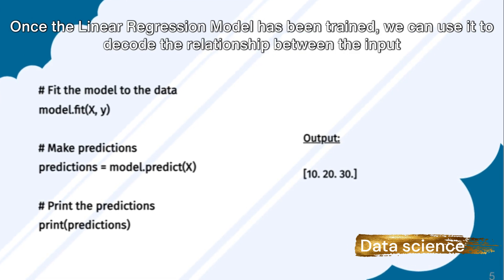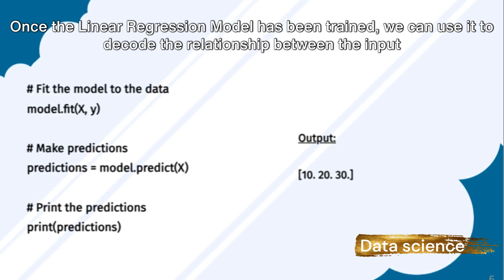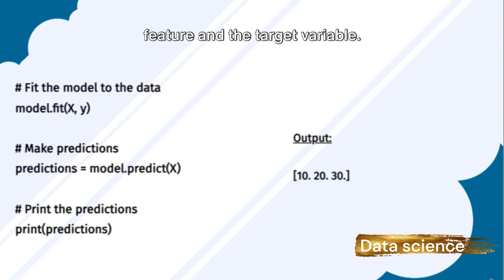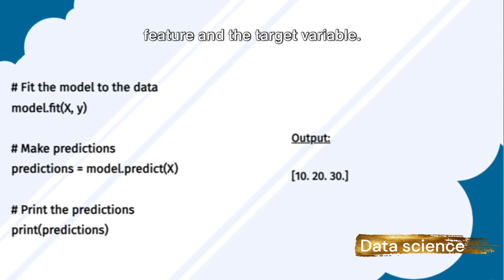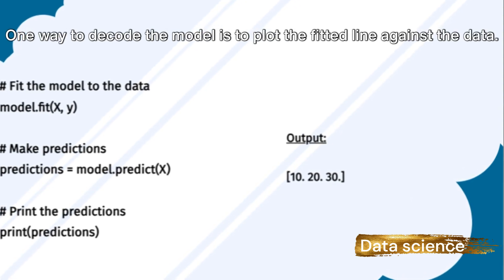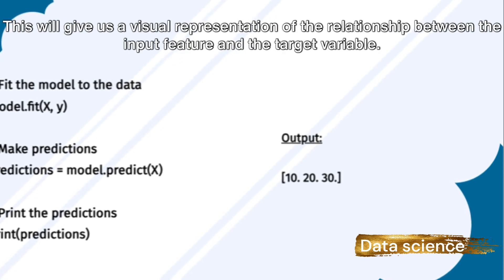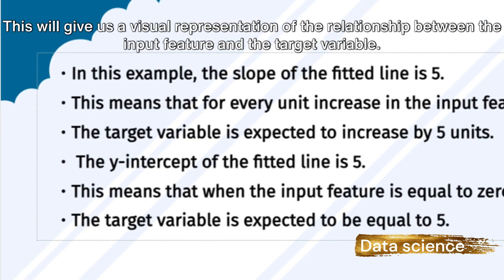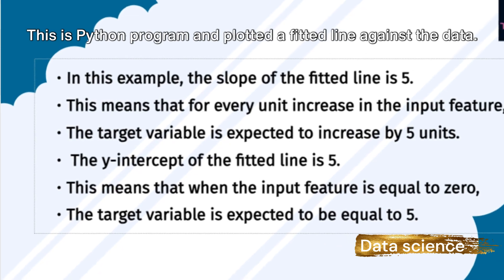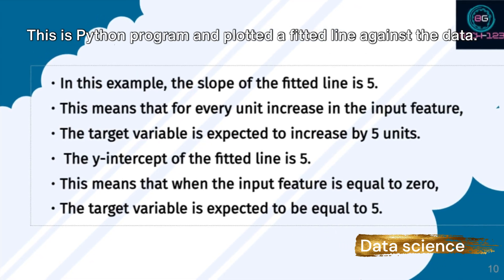Once the linear regression model has been trained, we can use it to decode the relationship between the input feature and the target variable. One way to decode the model is to plot the fitted line against the data. This gives us a visual representation of the relationship between the input feature and the target variable. This is a Python program with a plotted fitted line against the data.